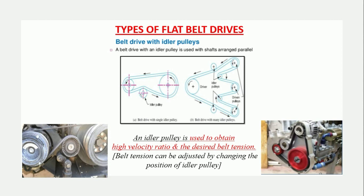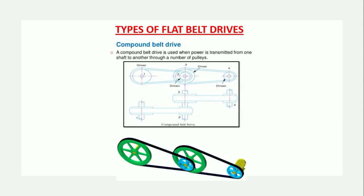The next type is the compound belt drive. As the name suggests, it is used when power is to be transmitted from one shaft to another through a number of intermediate pulleys. This kind of belt drive combines open belt drives, and a special advantage of the compound belt drive is that it gives a high reduction ratio, making it useful for a number of applications.